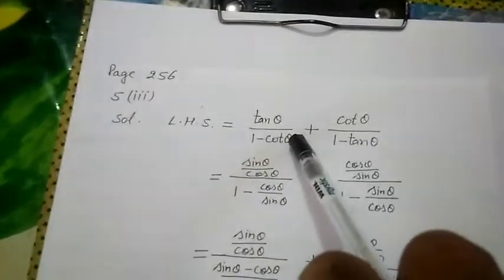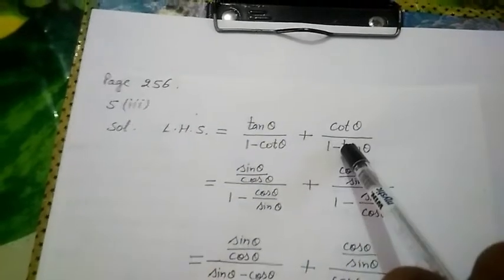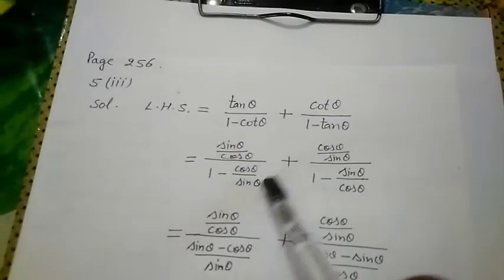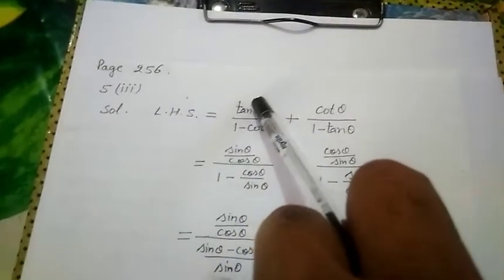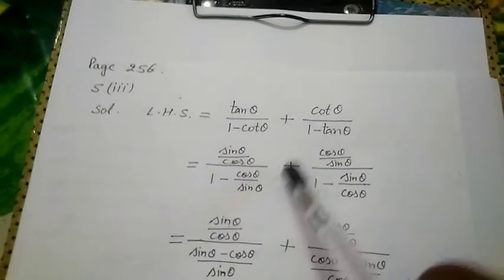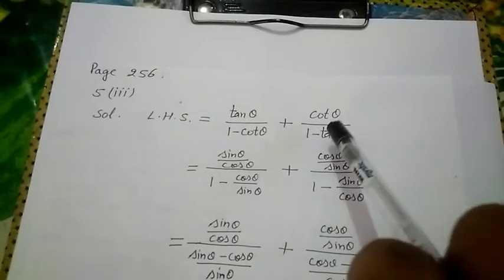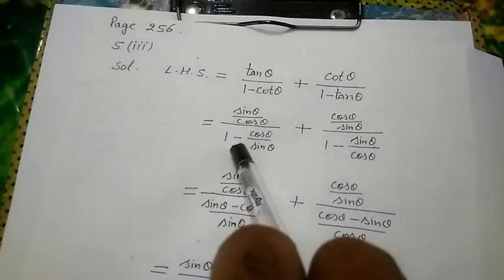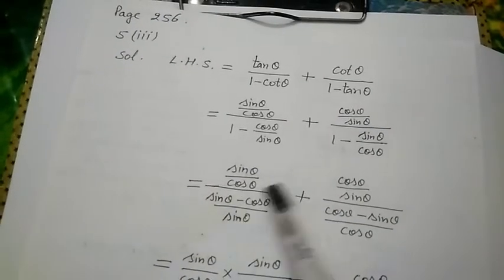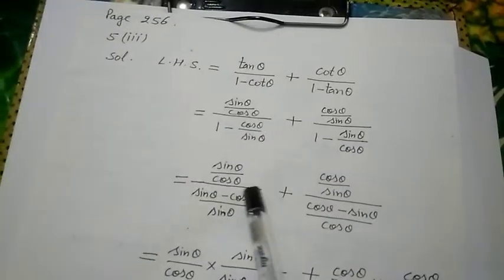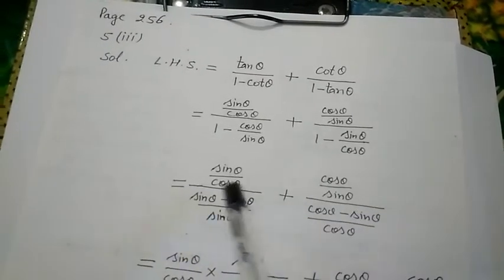Starting with LHS, the first task is to convert all T-ratios other than sin and cos into sin/cos — this must be done carefully as mistakes are likely here. Tan θ becomes sin θ/cos θ; cot θ becomes cos θ/sin θ. Substituting: first term has sin θ/cos θ over (1 − cos θ/sin θ); second term has cos θ/sin θ over (1 − sin θ/cos θ). Taking LCM of denominators: first denominator LCM is sin θ giving (sin θ − cos θ); second denominator LCM is cos θ giving (cos θ − sin θ).